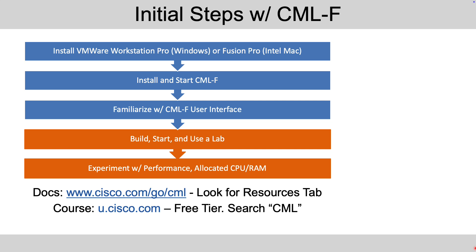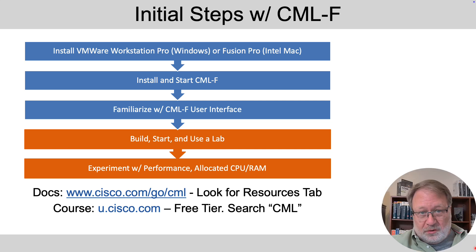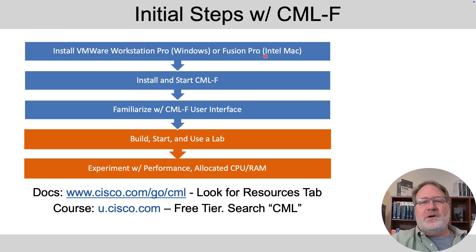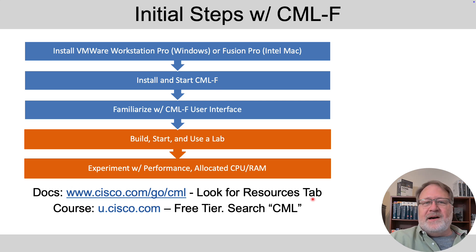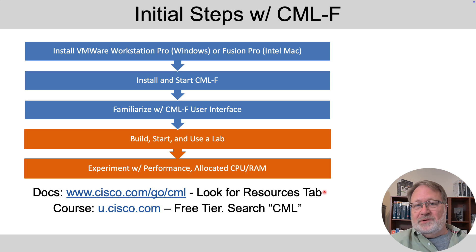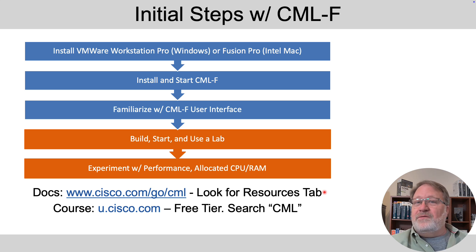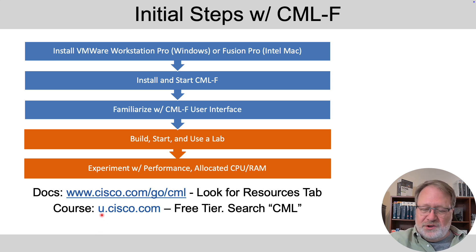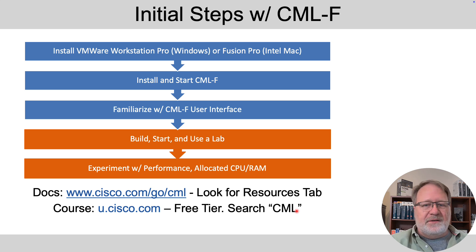So now what? How do you get started? Your first step is to install the appropriate VMware desktop virtualization tool — VMware Workstation Pro or Fusion Pro. Then install and start CML Free. If you go to the link shown and look at the resources tab, that's where you find the place to download CML Free. Then familiarize yourself with the CML user interface — there's a full free six-hour course at Cisco U, at u.cisco.com. Search for CML there and you'll find the course. Or you can just experiment and follow along with this video series.